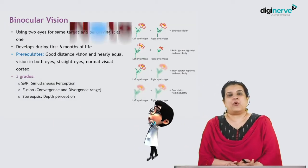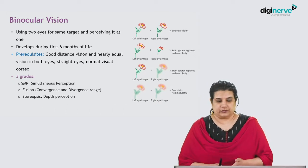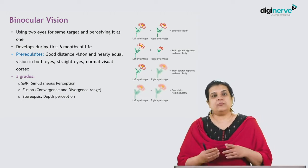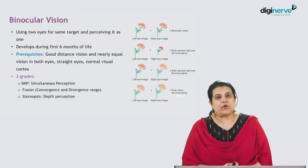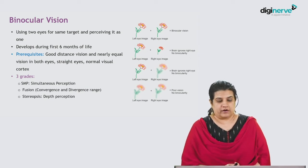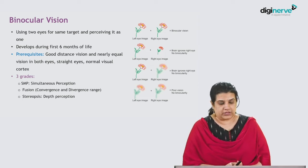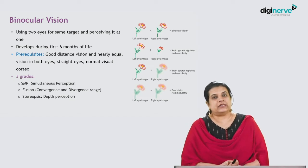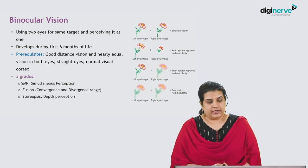Another very important concept involved in avoidance of squint is binocular vision. It refers to using both eyes for looking at the same target and perceiving it as one. It develops during the first six months of life. The prerequisites for good binocular single vision are good distance visual acuity and nearly equal vision in both eyes, straight eyes with no misalignment, and a normal visual cortex. There are three grades: simultaneous macular perception, fusion — which involves convergence and divergence range — and stereopsis, which refers to depth perception.